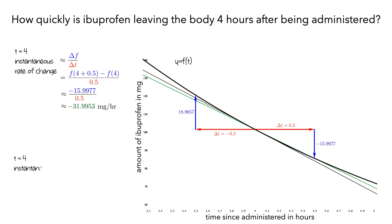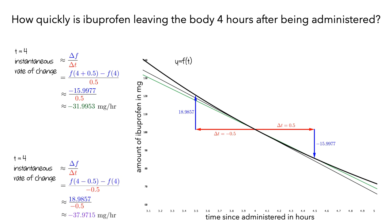Let's use this new interval to think about the instantaneous rate of change at 4 hours. This is approximated using a change in f divided by the change in t. For this interval, it's the difference between f evaluated at 4 minus 0.5 hours and f, divided by negative 0.5. With a few more calculations, we see that over this new interval of time, ibuprofen leaves the body at a rate of almost 38 milligrams per hour. On the graph, this value would be the slope of a second secant line, shown in purple, connecting the endpoints of the interval.